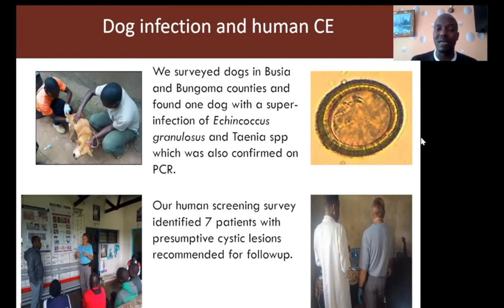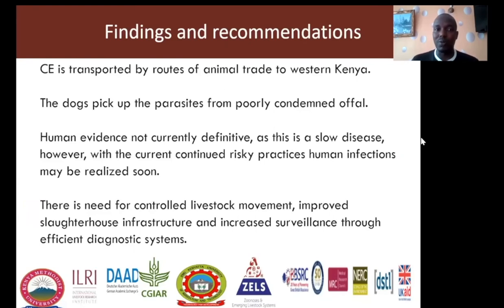On the human component of the study, our screening survey involving 1,002 participants identified seven patients with presumptive cystic lesions recommended for follow-up according to the World Health Organization classification and recommendation. We find that cystic echinococcosis is transported via routes of animal trade to Western Kenya, and that dogs pick up the parasite from poorly condemned offal.